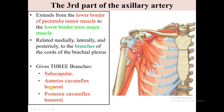The anterior circumflex humeral artery originates from the lateral side of the axillary artery. It is smaller compared to the posterior circumflex humeral artery, passes anterior to the surgical neck of the humerus, and anastomoses with the posterior circumflex humeral artery. It supplies the surrounding tissue including the glenohumeral joint and the head of the humerus.